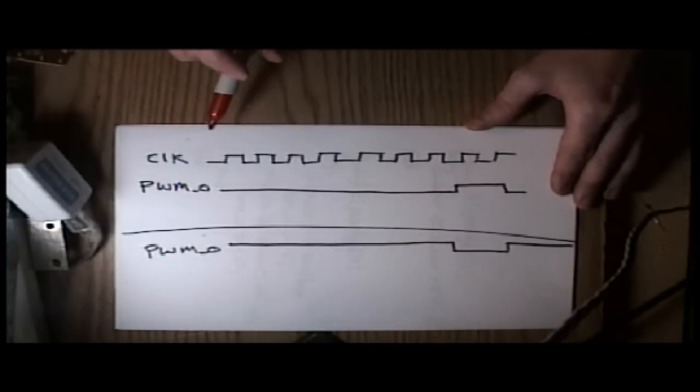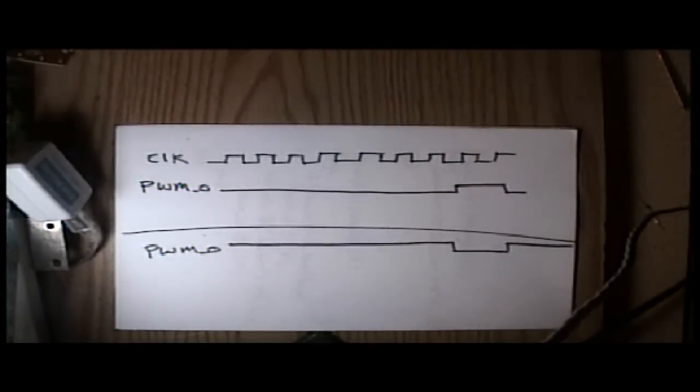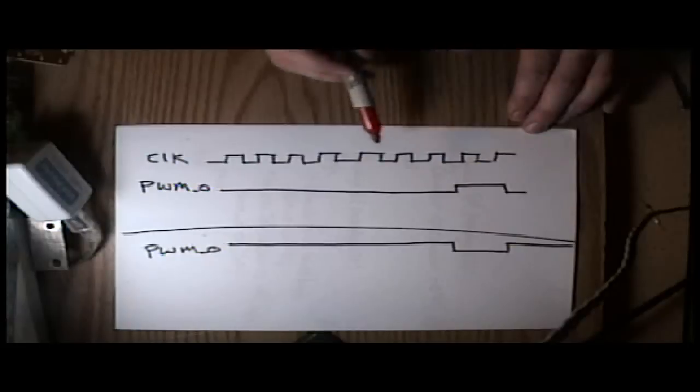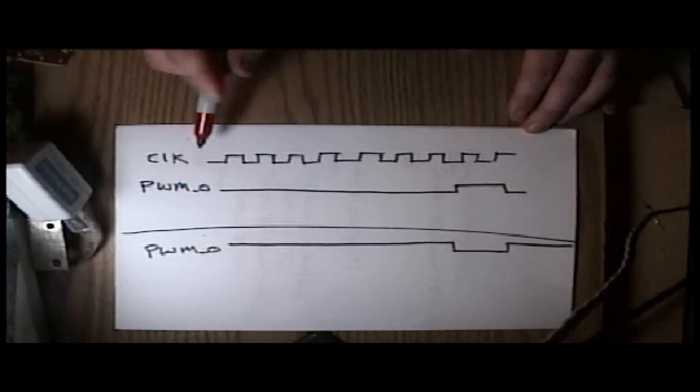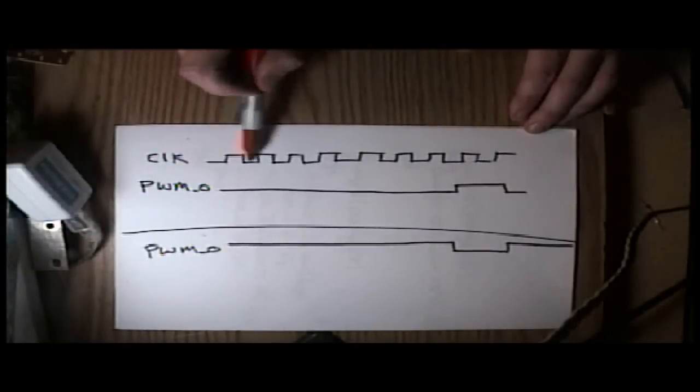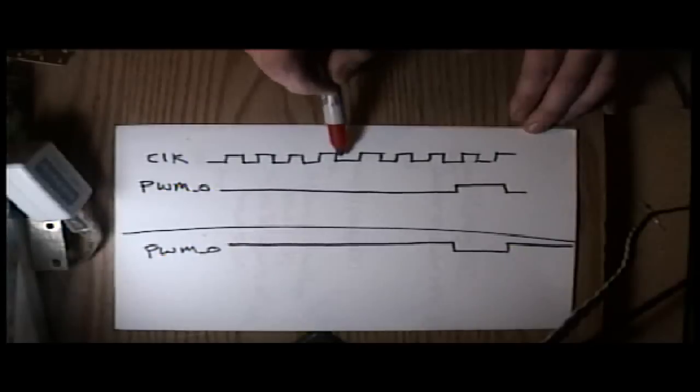For those of you that watched last week, you'll remember that I made a counter circuit that would blink an LED. This is the same basic structure as the blinking LED. We have a clock input, so this is a regular pulse that goes into the FPGA to an input pin.